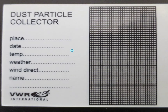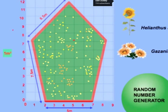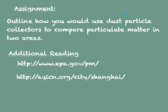An efficient way to count the particulate matter on one of these cards — one that would not require you to count every single square — is to reflect on topic 2.3: the use of the quadrat to estimate populations.